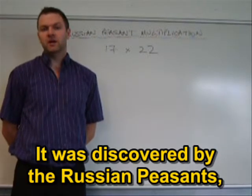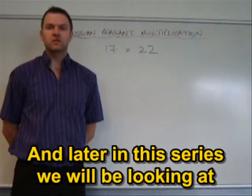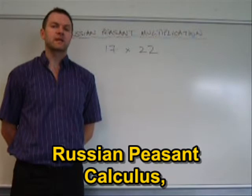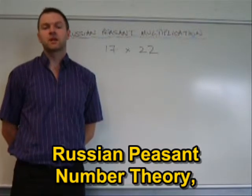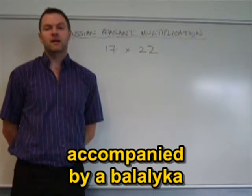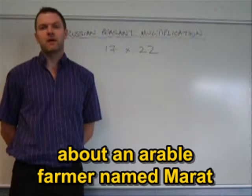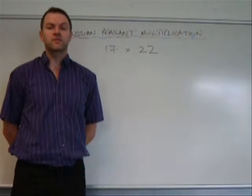It was discovered by the Russian peasants, who were noted mathematicians. And later in this video series we'll be looking at Russian peasant calculus, Russian peasant number theory, and also listening to a folk song accompanied by a balalaika about an arable farmer named Marat who discovered an ingenious proof of the four-color theorem.